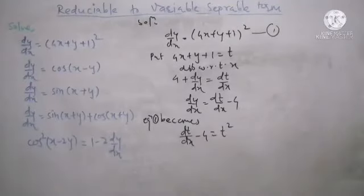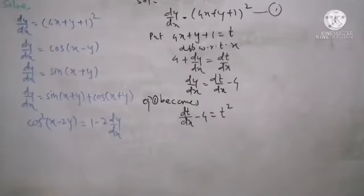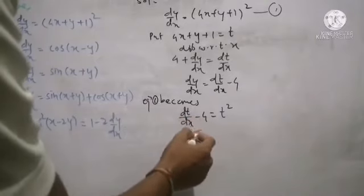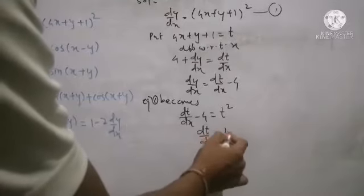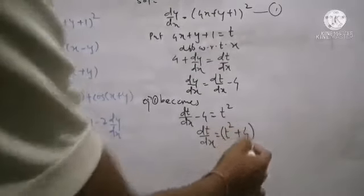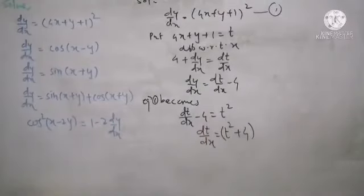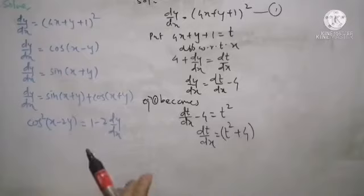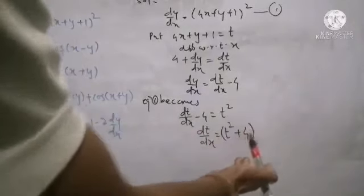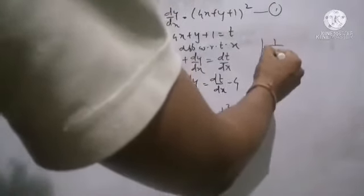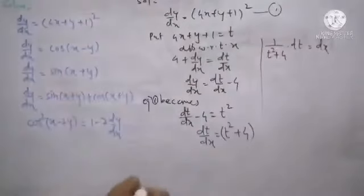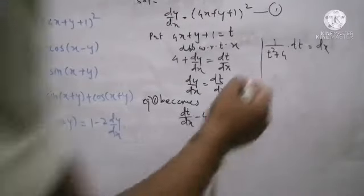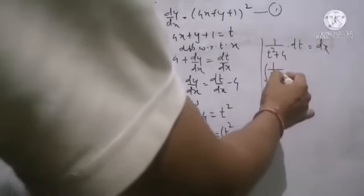This is reducible to variable separable by the substitution. To make it variable separable, we first separate the operator. dt by dx on the left hand side, and minus 4 gets transferred becoming plus 4, so dt by dx equals t squared plus 4. We put a bracket on the right hand side term of t. To convert to variable separable form, we separate the operator: dx takes on the right hand side and the term of t takes on the left hand side. On the left hand side: numerator 1, denominator t squared plus 4, and operator dt. On the right hand side: only dx.